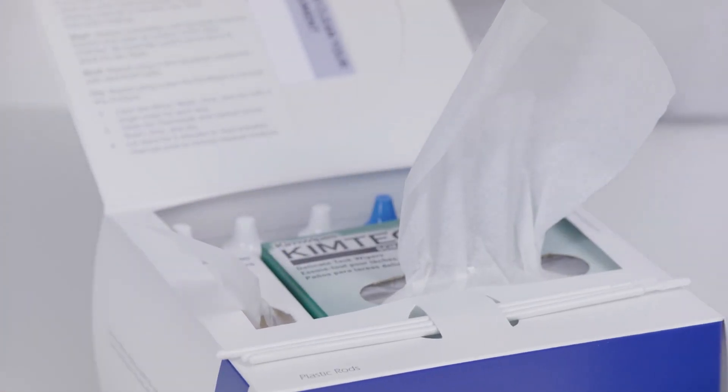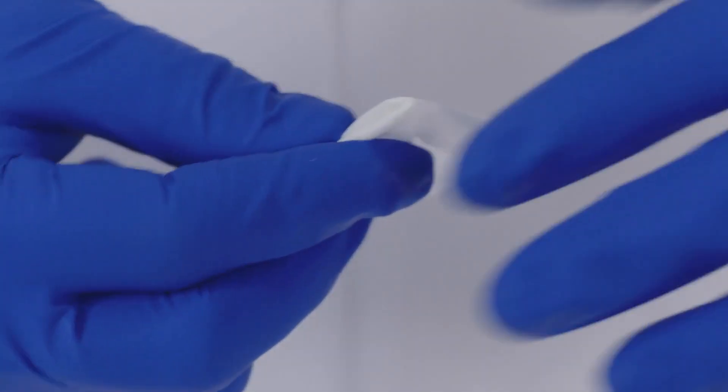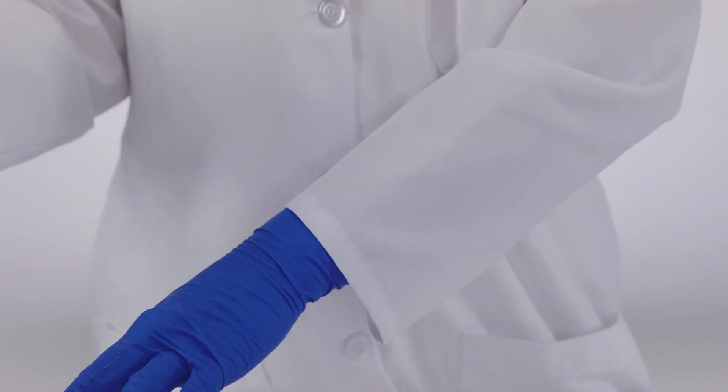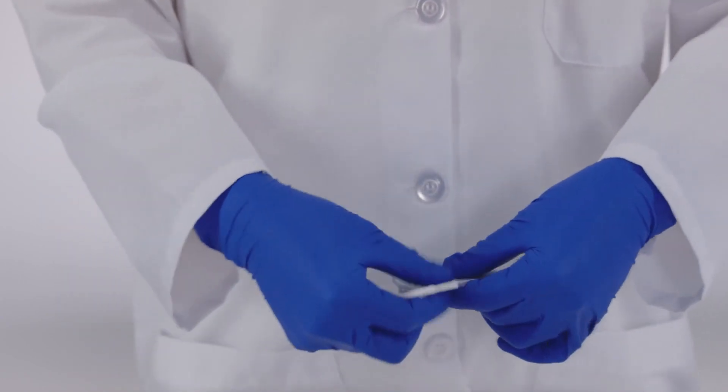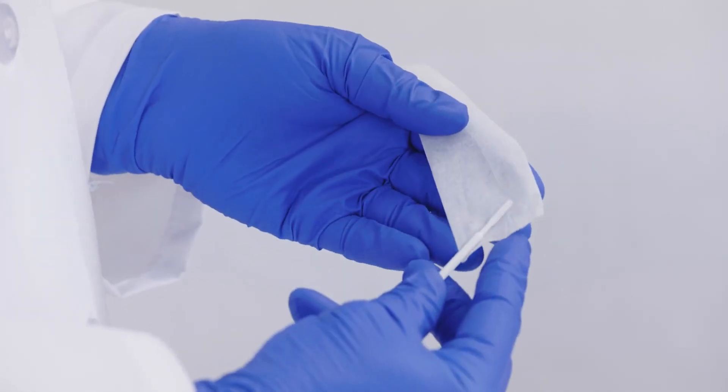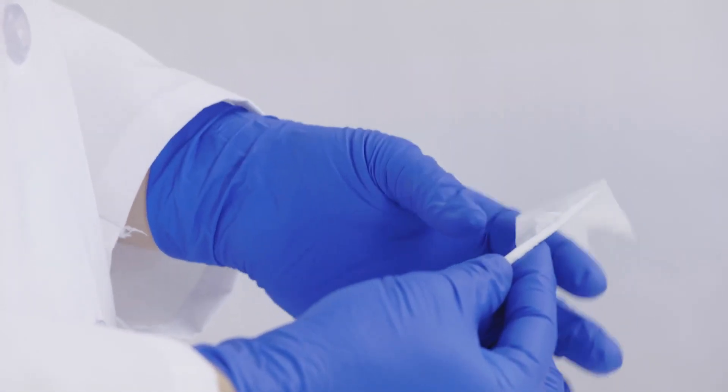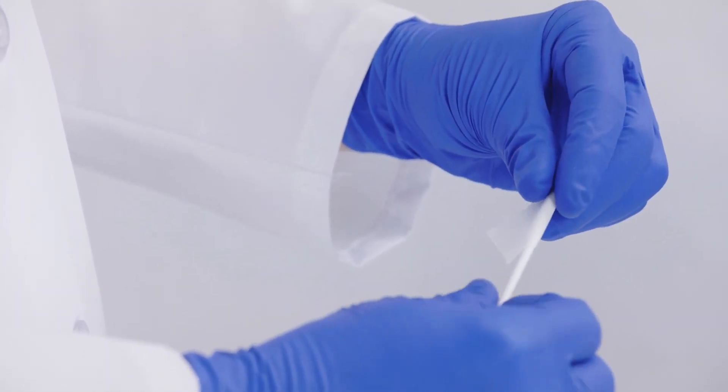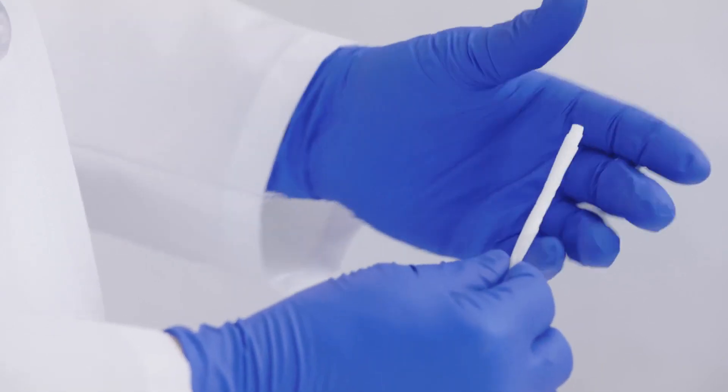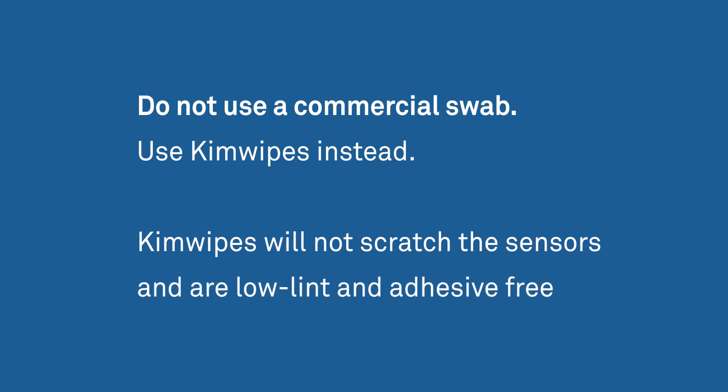To do this, use a cleaning rod, strips of kimwipes, and isopropyl alcohol or cleaning solution. Cover the end of a cleaning stick completely with a kimwipe. To do this, tear the strip in half. If you use a whole strip, it'll be too thick to fit into all the corners of the sample chamber. Hold the stick at a 45 degree angle. Fold the corner over the stick and twist several turns. Once the end of the stick is covered, fold the strip back toward you and twist the end around the stick. It's important not to use a commercial swab because the adhesives used to glue the cotton to the stick will contaminate the mirror and sensors. Kimwipes won't scratch the sensors and are adhesive free and low lint.